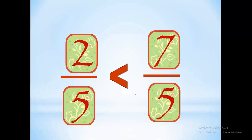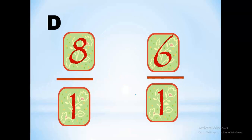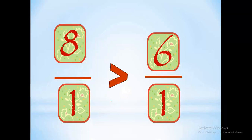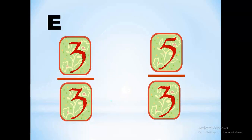So 7 over 5 is the biggest fraction. For 8 over 1 and 6 over 1, 8 is higher than 6, so 8 over 1 is the highest. For 3 over 3 and 5 over 3, we have the same denominator; the numerators are 3 and 5, so the highest number is 5 — 5 over 3 is the biggest fraction.